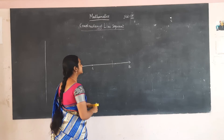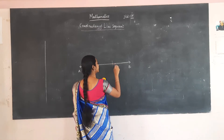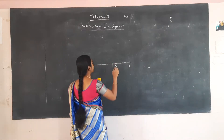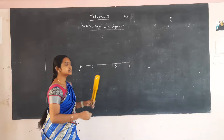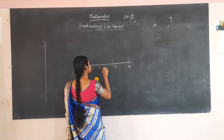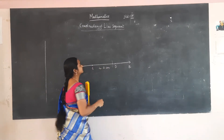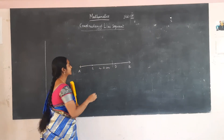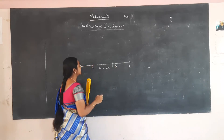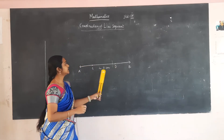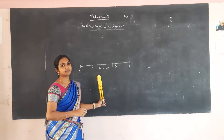Let this arc point be D. When you measure this distance, it will be 4.2 cm. Now we have constructed a line segment CD of 4.2 cm.